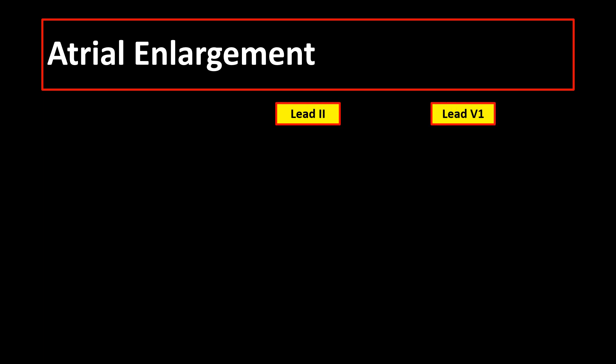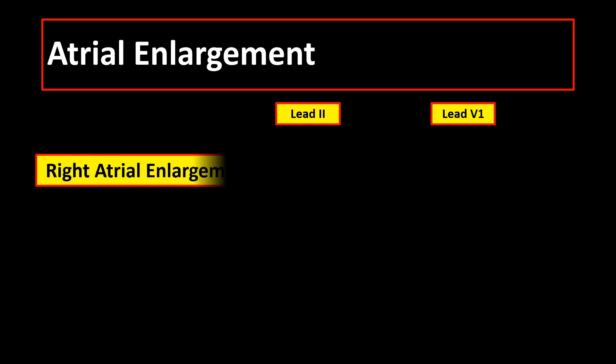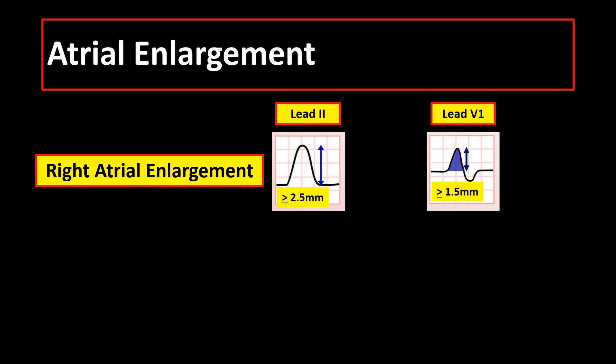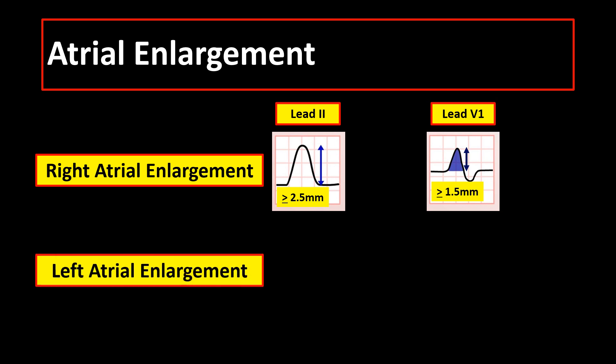Let us discuss atrial enlargement first. When investigating for atrial enlargement, the best leads to look at are the P waves of lead 2 and lead V1. In right atrial enlargement, there is P wave amplitude of at least 2.5 mm or 2.5 small boxes in lead V2, or P wave amplitude of at least 1.5 mm or 1.5 small boxes in lead V1. That is the criteria for right atrial enlargement.